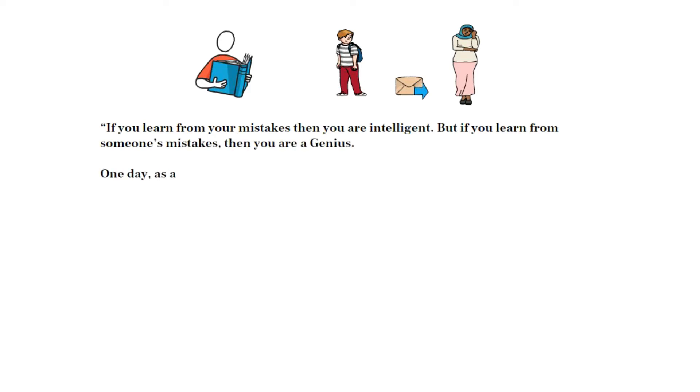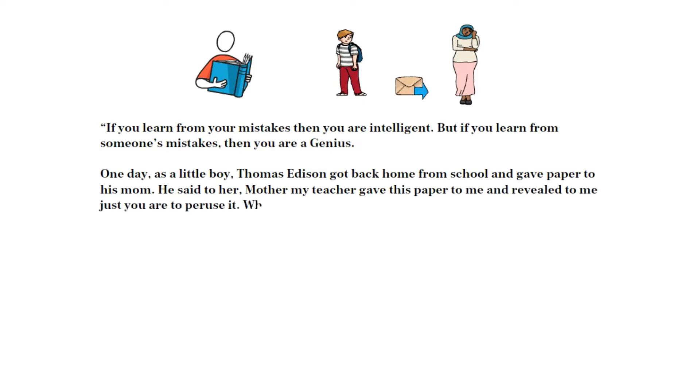One day, as a little boy, Thomas Edison got back home from school and gave paper to his mom. He said to her, mother my teacher gave this paper to me and told me only you are to read it. What does it say? Her eyes filled with tears as she read the letter aloud to her boy: Your son is a genius. This school is not the right place for him, and there are no efficient teachers to train him. So please train him yourself.